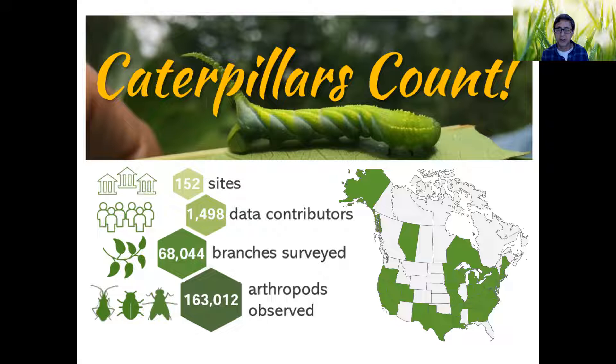At this point we have over 150 sites, more than 1,500 people have contributed data, and we've sampled over 68,000 branches and recorded over 160,000 bugs. This isn't a one-and-done endeavor. For some participants it is, and that's totally fine. But part of the goal of this project is very much to develop a long-term monitoring dataset.